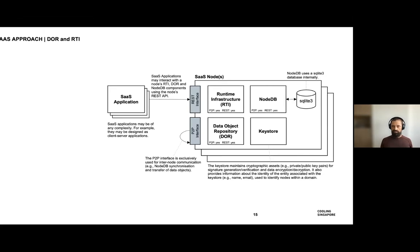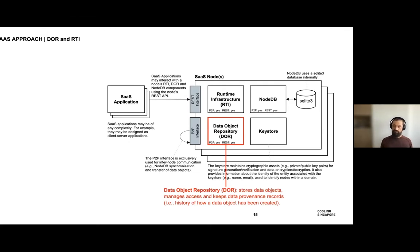I want to highlight three key components. The first is the data object repository, which stores data objects, manages access to them, and keeps data provenance records — important because I'll mention a use case for that later. Data provenance is basically a complete history of how a data object has been created. The second key component is the runtime infrastructure, which executes your jobs using the various processes deployed on a particular node. The data object repository manages data, and the runtime infrastructure runs your simulations.